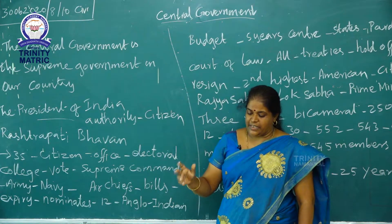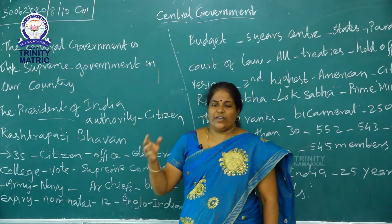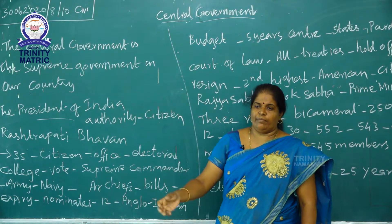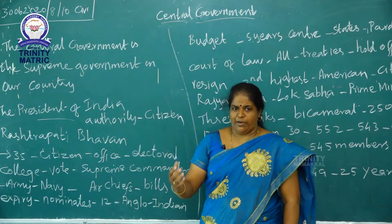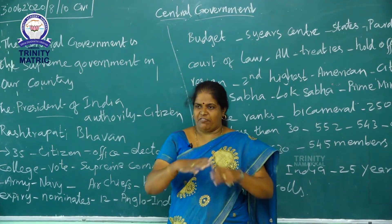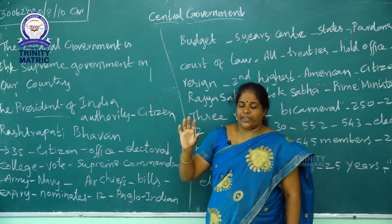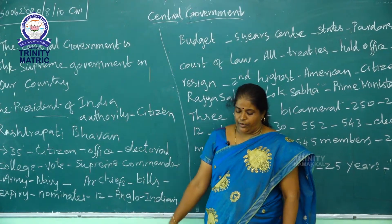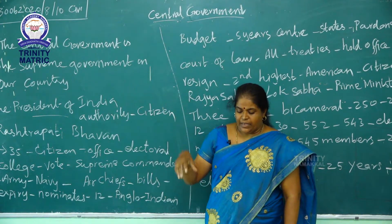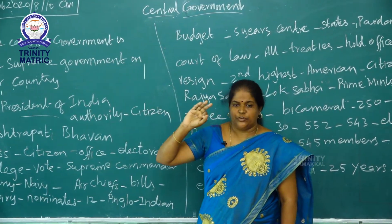Our constitution has a democratic form of government. India is the largest democratic government, and the definition of democracy — who stated it and everything — we learned in the earlier lesson. The central government consists of three organs: the union executive, legislative, and judicial.